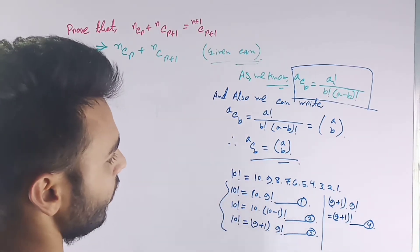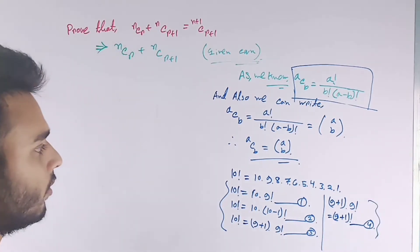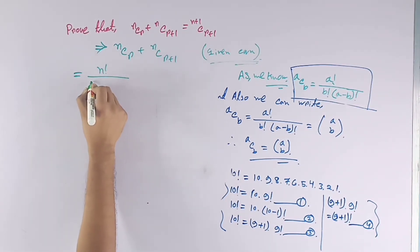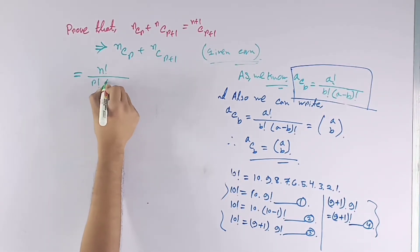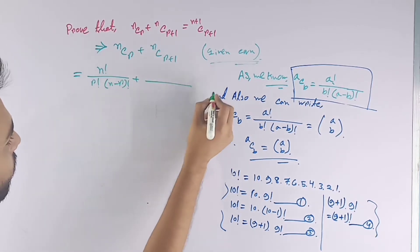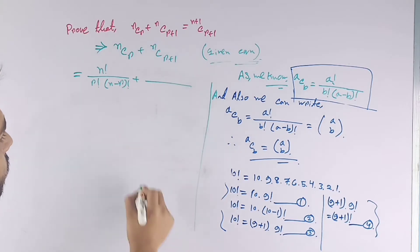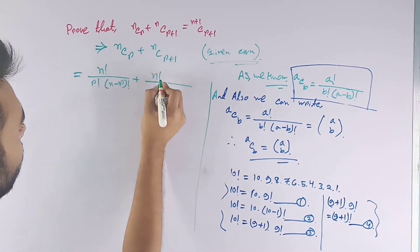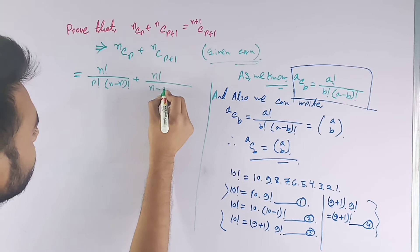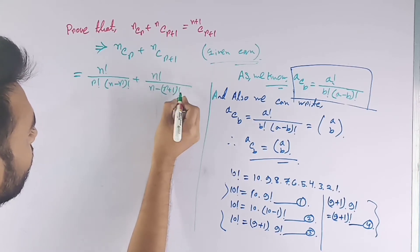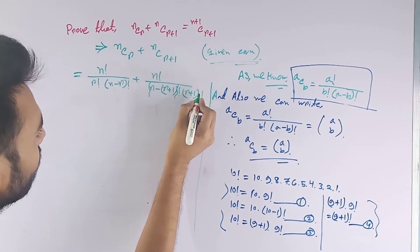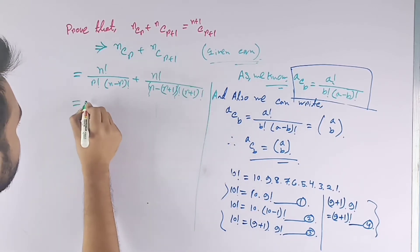So using aCb = a! / (b! × (a−b)!), we can write nCr = n! / (r! × (n−r)!) plus nC(r+1) = n! / ((r+1)! × (n−r−1)! ... sorry, (n−(r+1))!). That is, the denominator is (r+1)! × (n−r−1)!.